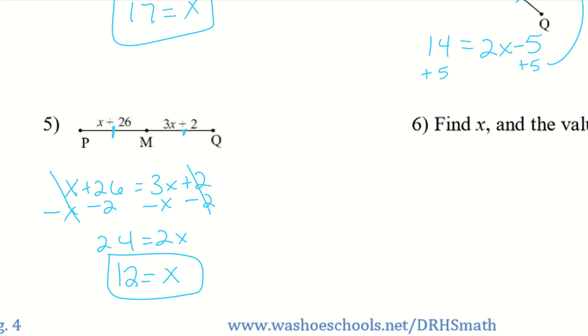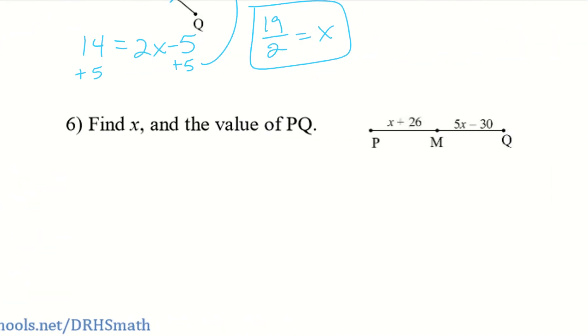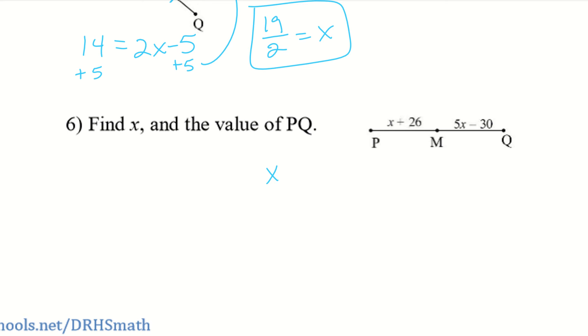Number 6. So number 6 also wants you to find PQ, but I want you to start off with finding X. So let's go ahead and go through that first. So here it is. Go ahead and try to find X if M is the midpoint, and then we'll talk about finding PQ. So since M is the midpoint, we have X plus 26 has to equal 5X minus 30. So I now have 56 equals 4X. So I go ahead and divide by 4. So X equals 14.